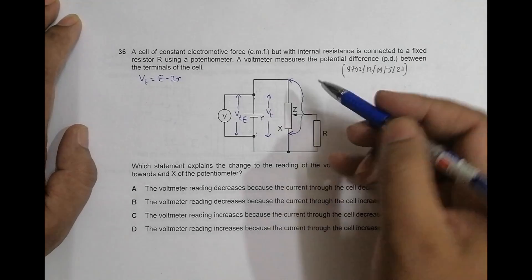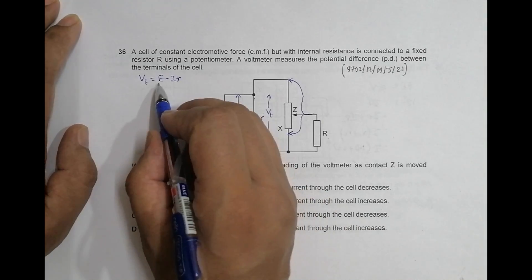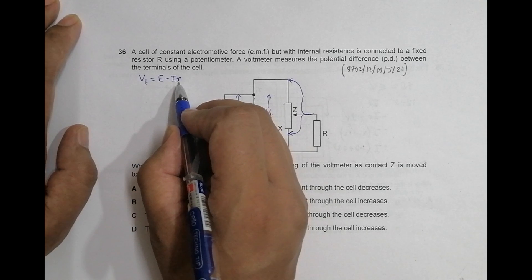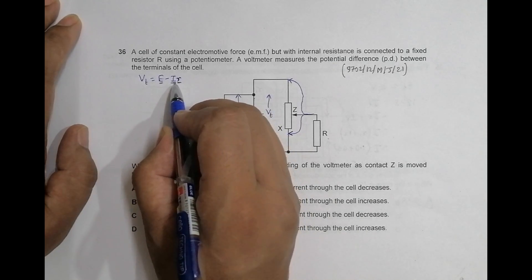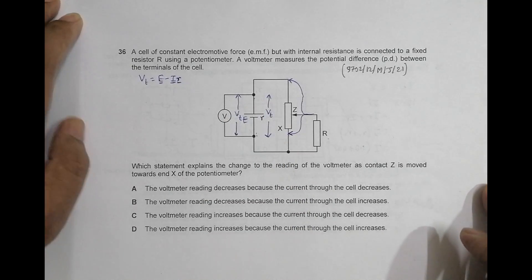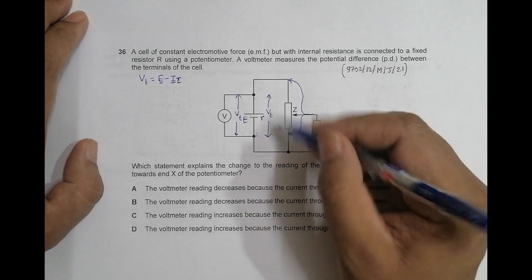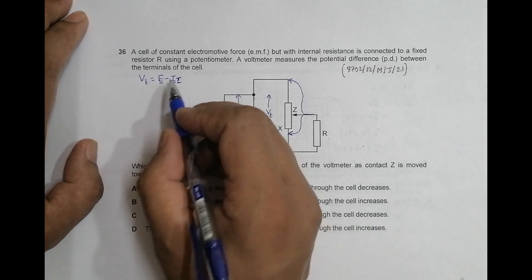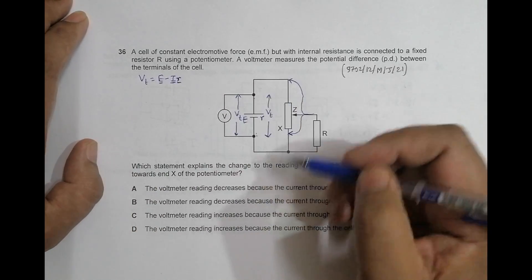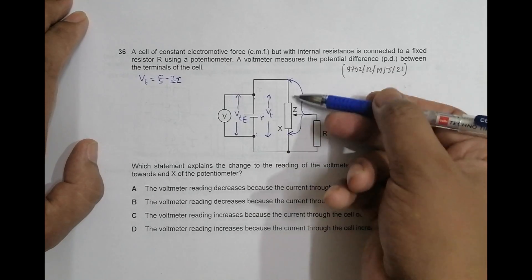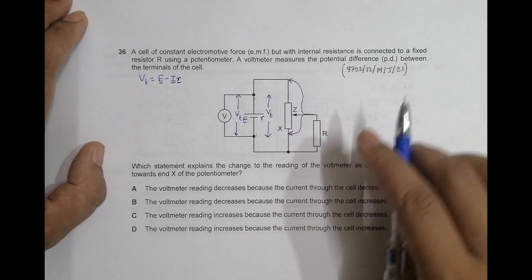When the contact is moved, E and small r are constant — what changes is the current i. This current i depends on the overall resistance of the circuit, and when the contact position changes, the resistance changes.